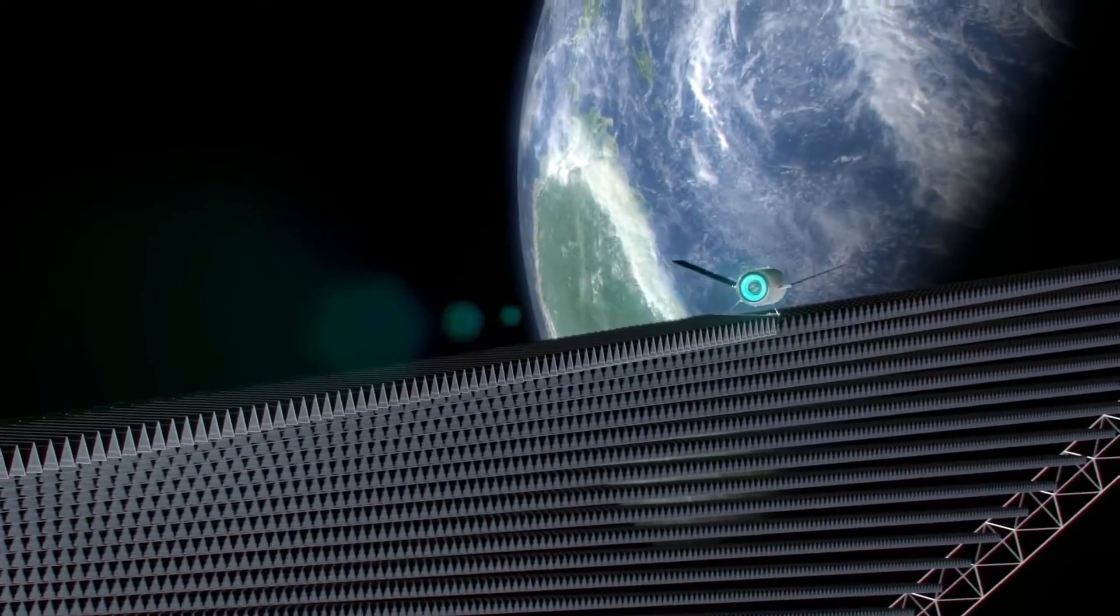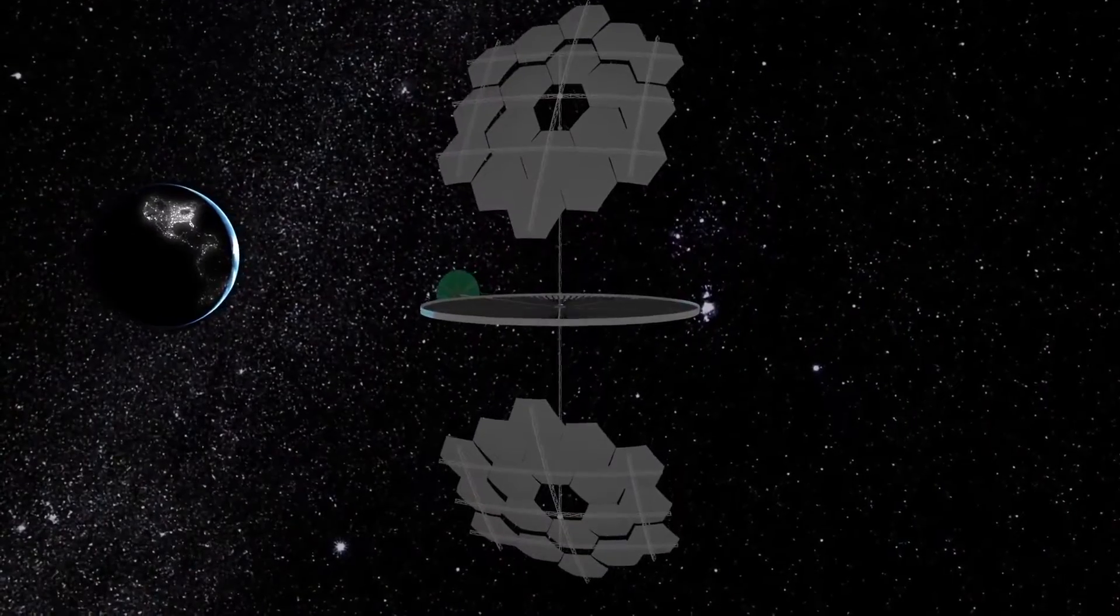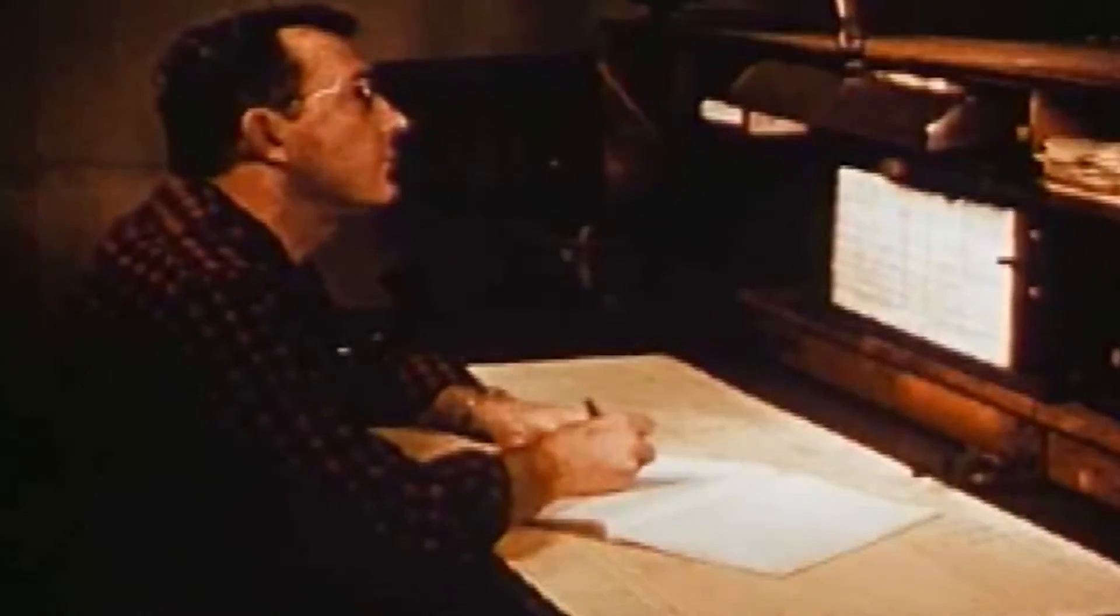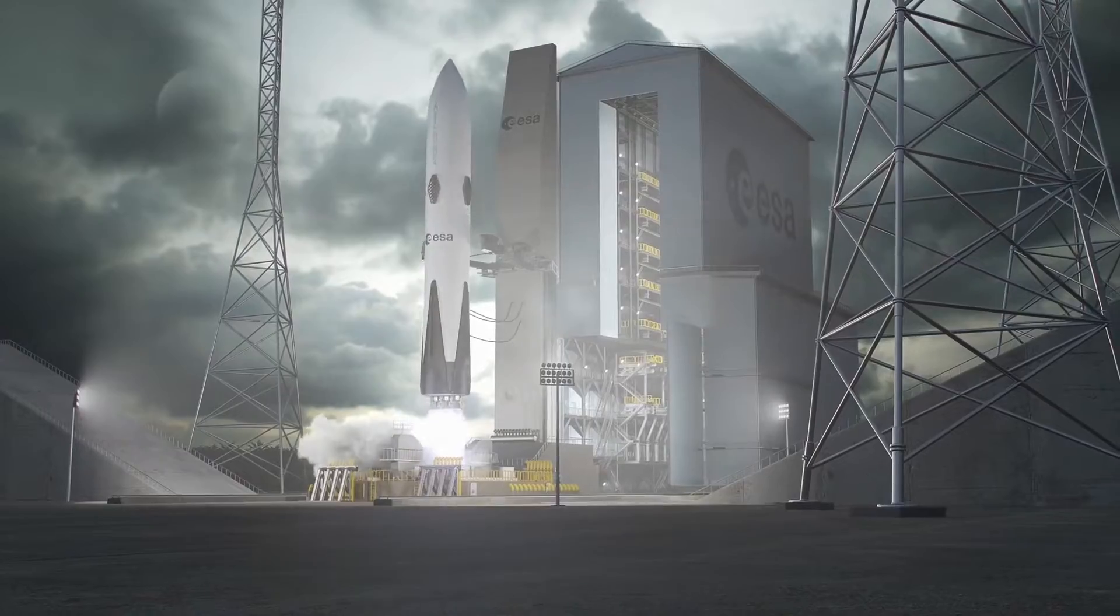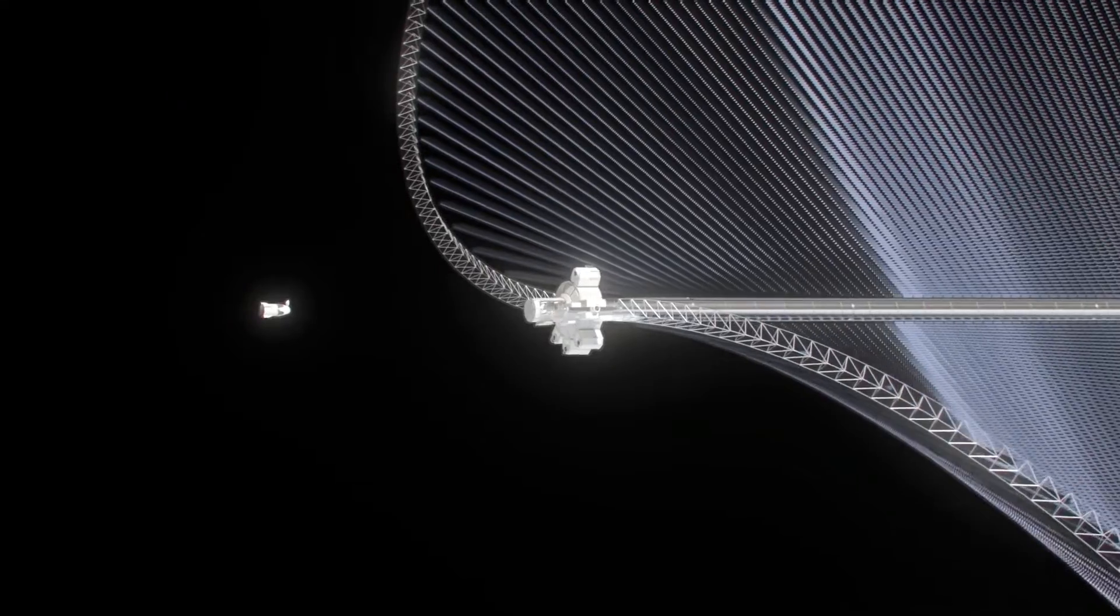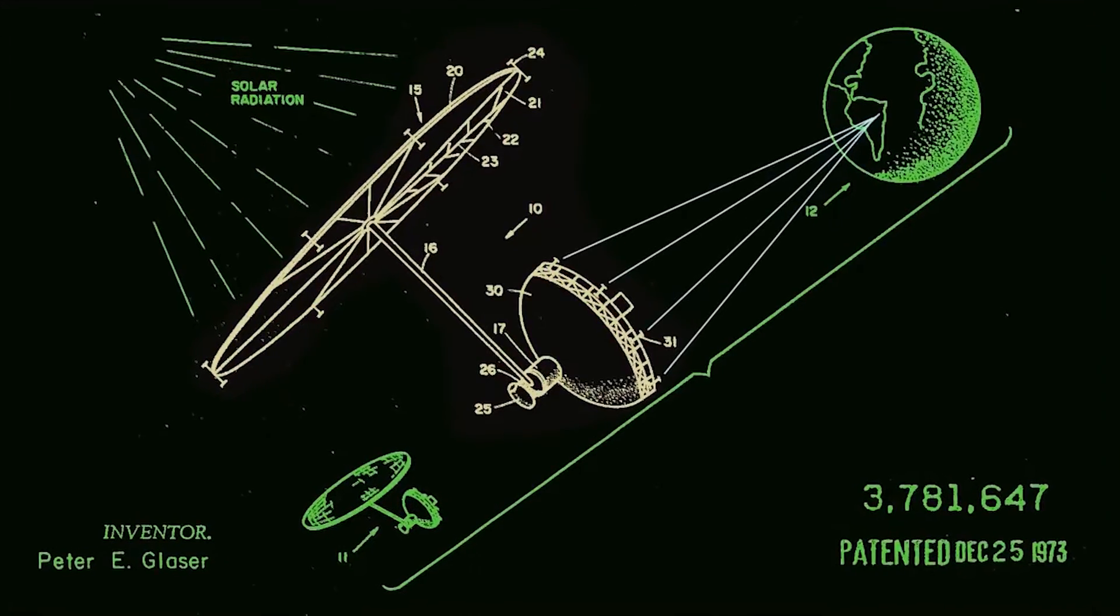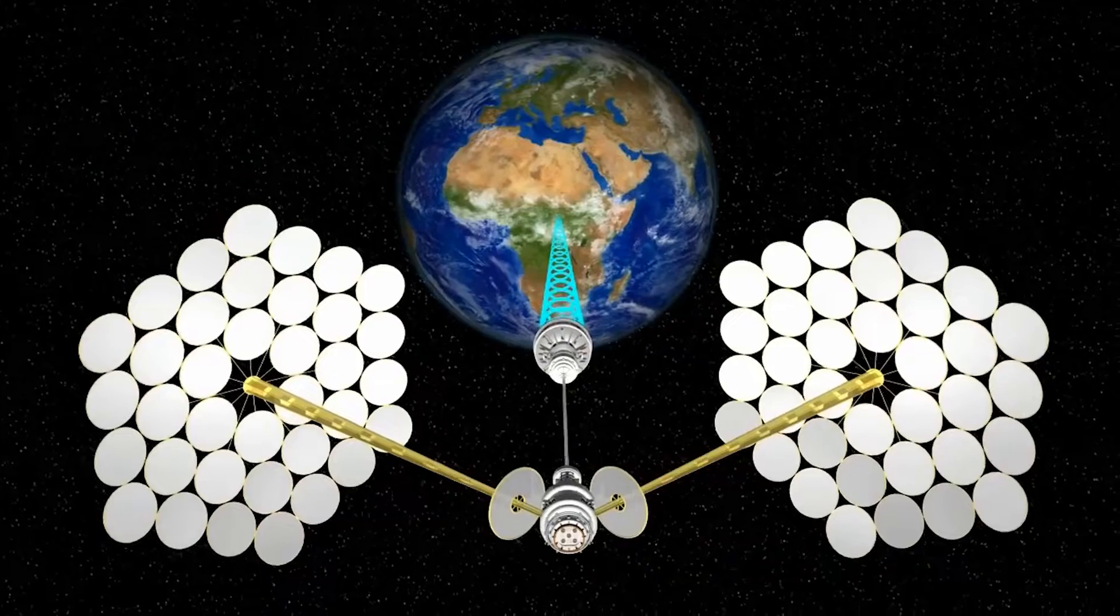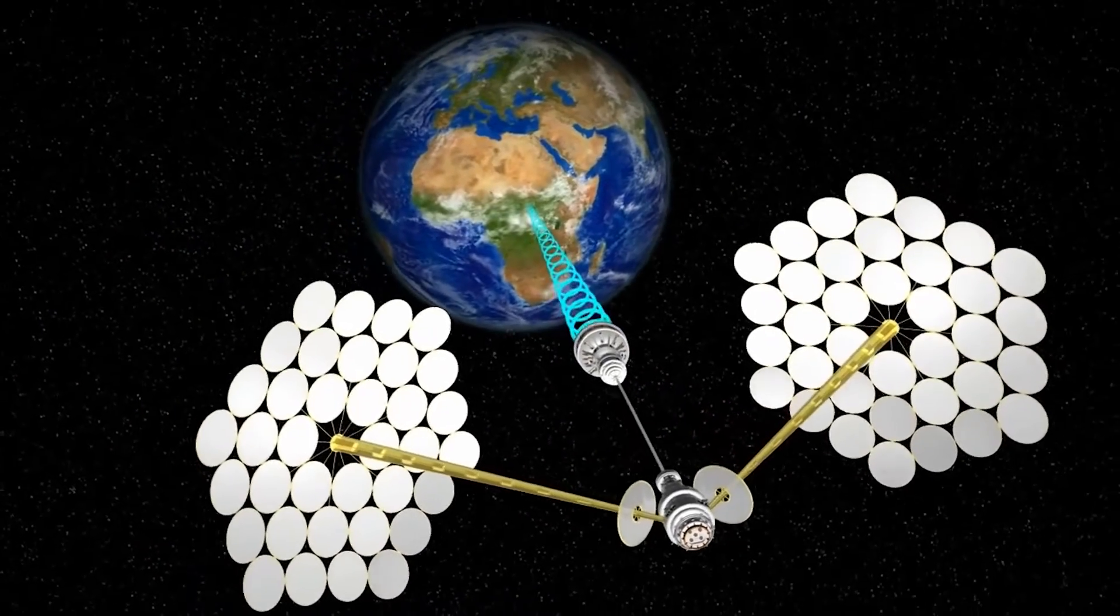The concept of Space Solar Power dates back to the late 1940s, when science fiction writer Isaac Asimov first wrote about it. However, it wasn't until recent technological advancements that it became a feasible reality. And while many people have embraced the idea of this project, there have been some skeptics along the way. One of the most notable was Elon Musk, who famously joked about it in 2012.